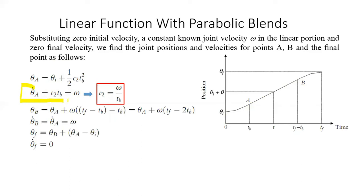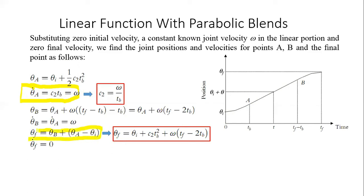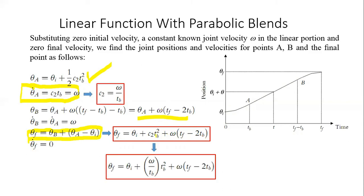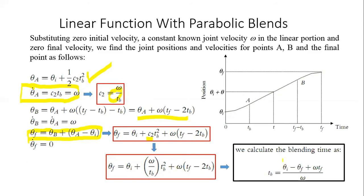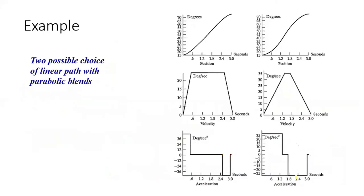Simplifying the symmetry equation gives c₂ = ω / t_b. Substituting this into the expression for θ_f yields θ_f = θ_i + (ω / t_b)·t_b² + ω·(t_f − 2·t_b), which simplifies to θ_f = θ_i + ω·t_b + ω·(t_f − 2·t_b). Rearranging to solve for the blend time t_b gives t_b = (θ_i − θ_f + ω·t_f) / ω.